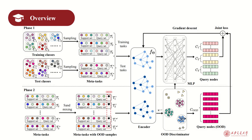This paper presents SMUG, a novel graph Few-Shot classification framework, to address the problem of identifying OOD samples in graph Few-Shot classification tasks. SMUG equips existing classification models with the ability of OOD detection. The figure below presents an overview of SMUG, which comprises two training phases.